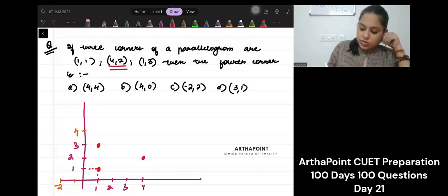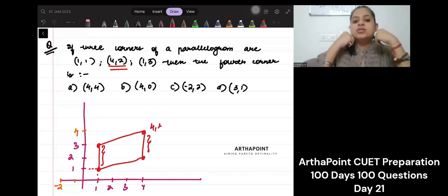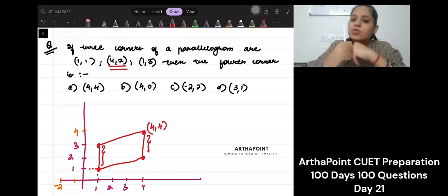And what you would do is, believe me, you're going to join this. And since this is 2, you're just going to fetch this 2 upwards. And you're going to join this. And you will tell me that the coordinate is (4,4). This is what you will do. This is not the right way to solve this question.